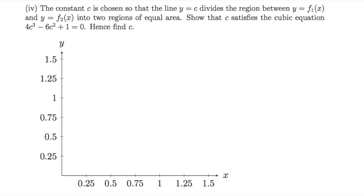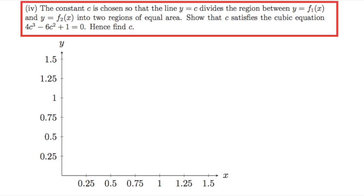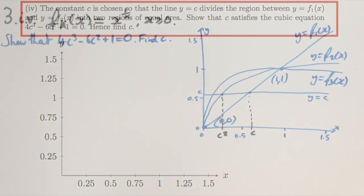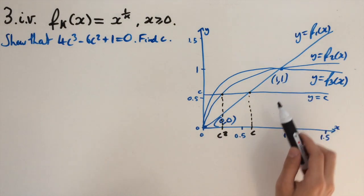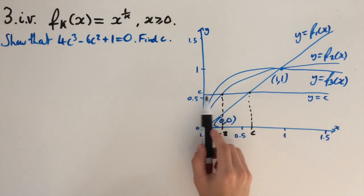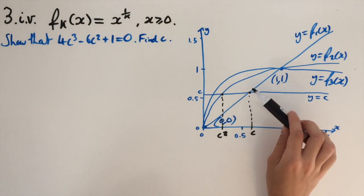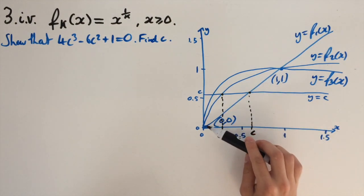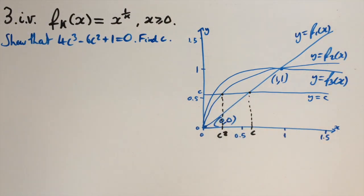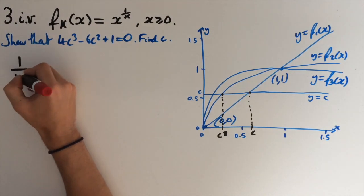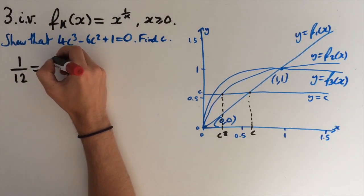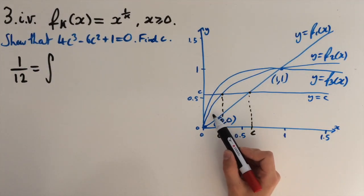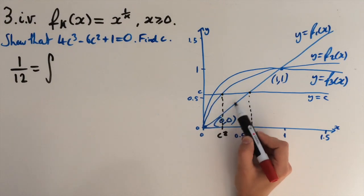For part iv, the last part of the question, given that c divides the region between f1 of x and f2 of x into two regions of equal area, we need to show that c satisfies the cubic equation 4c cubed minus 6c squared plus 1 equals 0, and then find the value of c. From earlier, we found the area between f2 and f1 was a sixth. We need c to cut this into two regions each of area a twelfth. We're going to consider the region below the line and use integration, splitting it into a curved part and a triangular part.